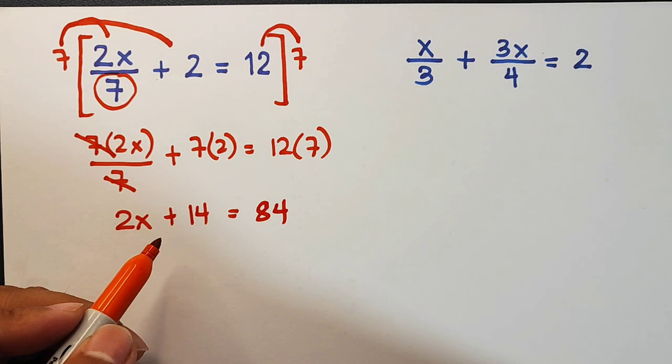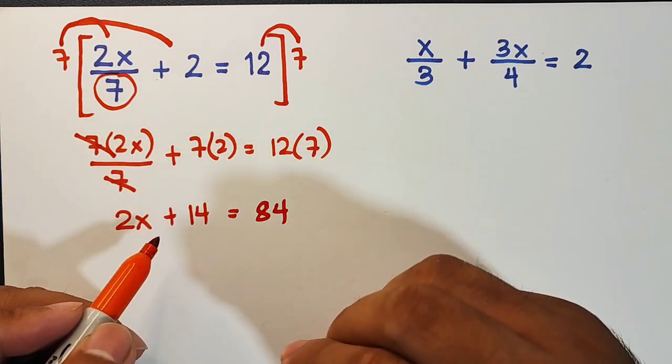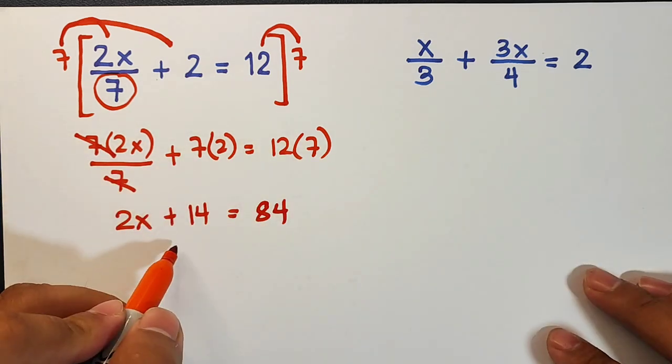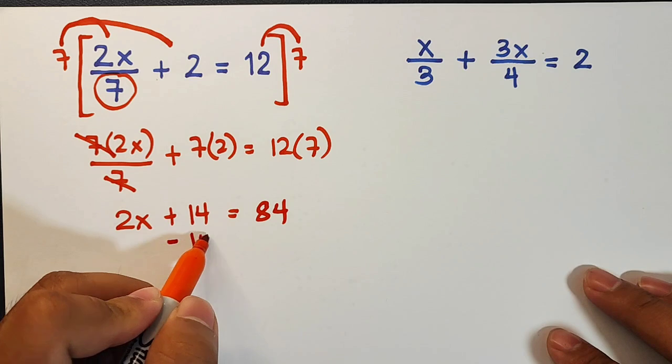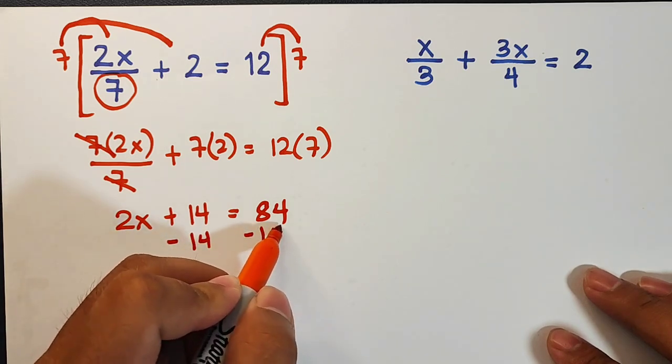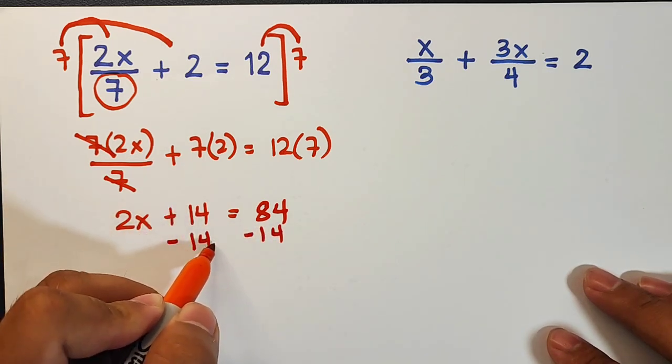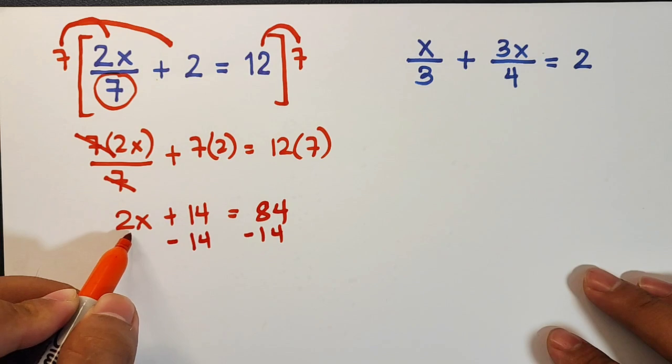We will use its additive inverse, which is negative 14. We will subtract 14 from both sides of the equation, so this will become 0, and what will remain here on the left side of the equation is 2x.